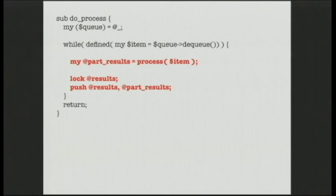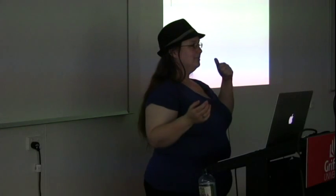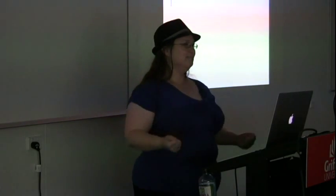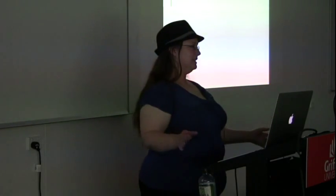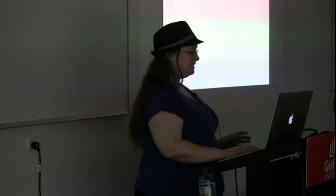Always lock your shared variables. This will of course mean potential deadlocks. If process A locks variable one then variable two, and process B locks variable two then variable one, they can both lock one to start with and then not be able to get the other lock, and your program will wait forever. It's a no-win problem. There is so much documentation on how to avoid deadlocks and race conditions - these are things to keep in mind.